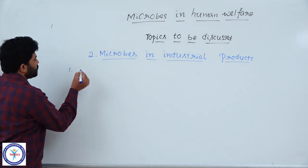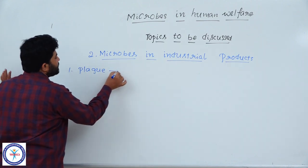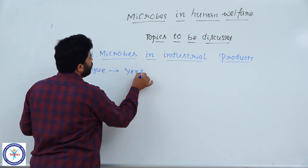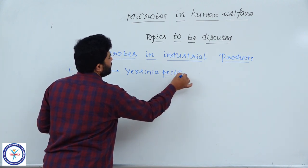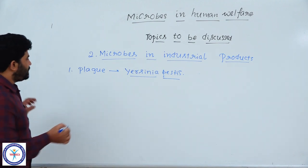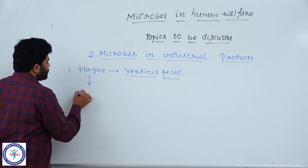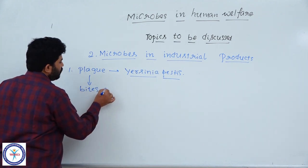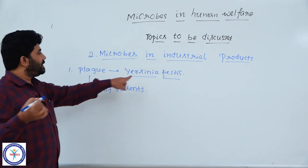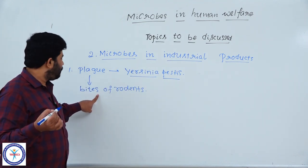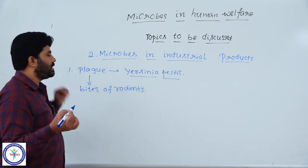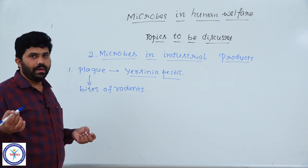The first disease is plague. Plague disease is caused by a bacterium called Yersinia pestis. Yersinia pestis is a bacterium that causes the dreadful disease plague. Plague generally comes from bites of rodents — in the rodents' mouth and saliva, this bacteria generally lives. If bitten by fleas or rodents, this bacteria can easily enter our body and cause the disease called plague. For this disease also, we have antibiotics.